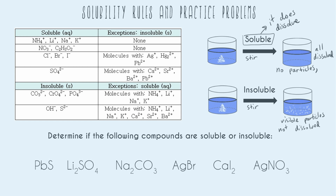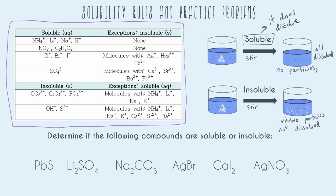That's the definition you need to understand before doing these practice problems. Now let's look at this big grid. Your textbook or teacher probably has a grid very similar to this that breaks down what's soluble and what's not. If you're in AP Chemistry, you'll definitely have to memorize this grid — it's one of the most important things you can memorize. If you're in a different chemistry class, it depends on your teacher.